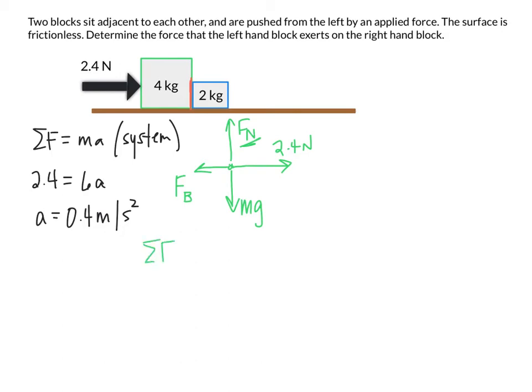For this part of the system now we could write again F equals MA for just this block. There's 2.4 newtons minus this force between that's pushing back on the 4 kilogram block, and now we're just looking at the 4 kilogram one so we're just going to use that for our mass times the 0.4. Okay and when you do your algebra here I'll write this out in this case just so you see it. So that 1.6 is showing up here, but the force between is actually just 0.8. Okay so different situation, different in between force.